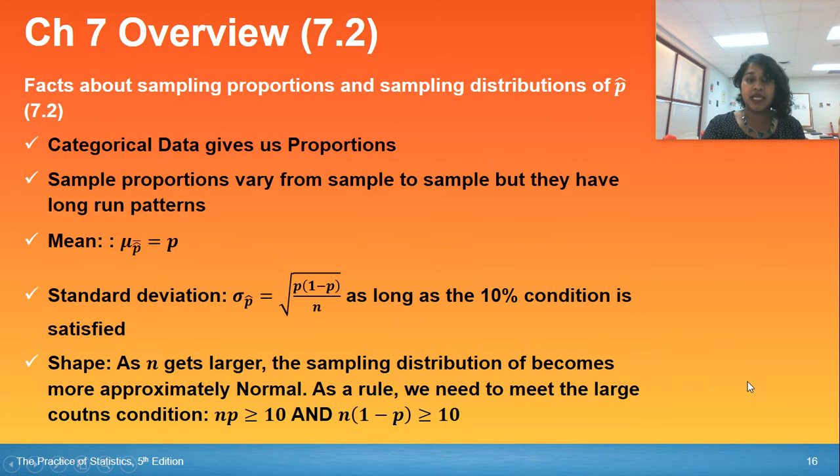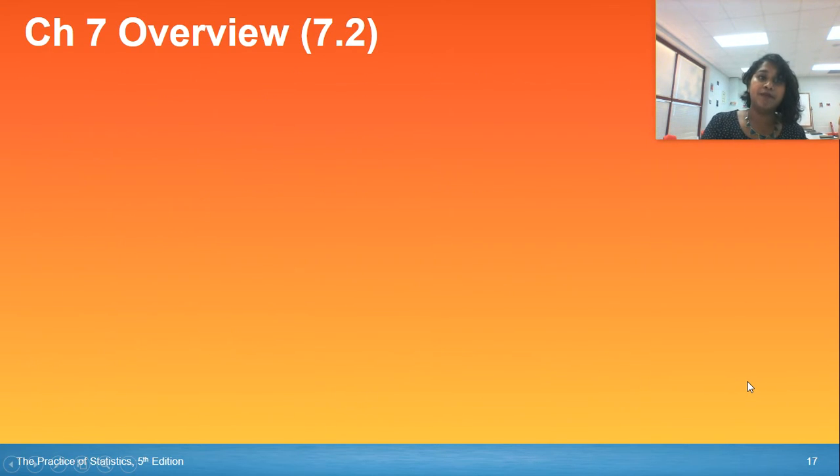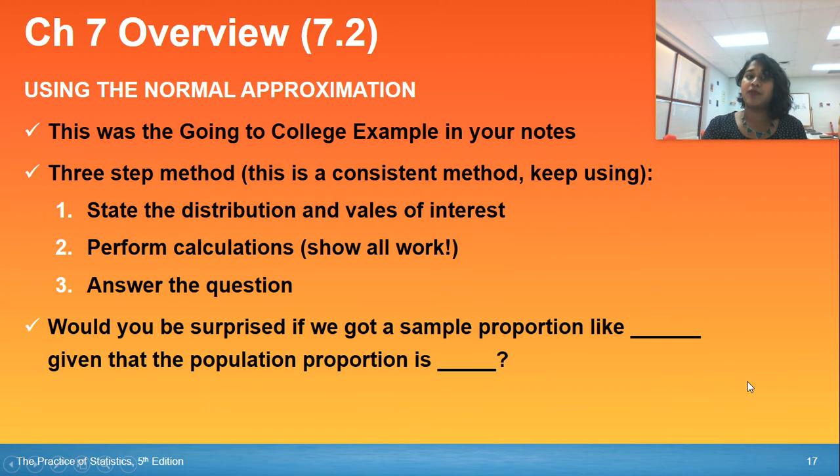Same with your shape. It will be approximately normal as long as your sample sizes are getting larger, as long as you meet the large counts condition. And that's that NP greater than or equal to 10, N times the opposite of P greater than or equal to 10. We learned something else about normal approximation in chapter 7.2. If your sample proportion is large enough, your samples are large enough that you have a normal approximation, then you're going to use the three-step method consistently. This is a tried and true method. These three steps are things you should be doing on an FRQ anytime you're dealing with that normal approximation. You state your distribution and values of interest. This could also be drawing the normal approximation with everything labeled. Perform calculations and show every step. And then of course, answer the question.